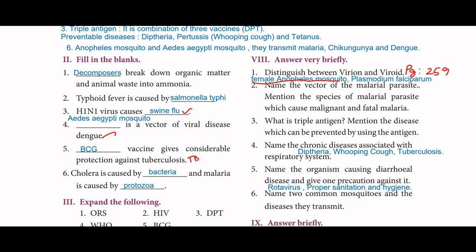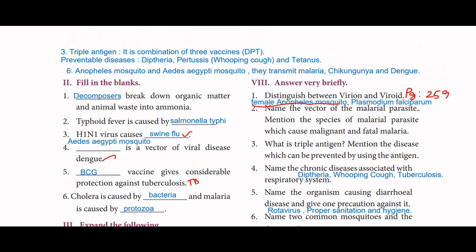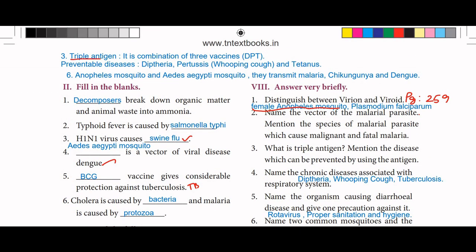Third question: what is triple antigen? Mention the diseases which can be prevented by using this antigen. Triple antigen is a combination of three vaccines — DPT. The preventable diseases are diphtheria, pertussis (whooping cough), and tetanus.